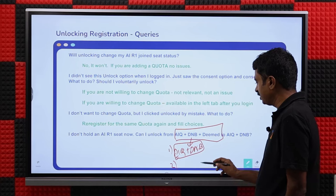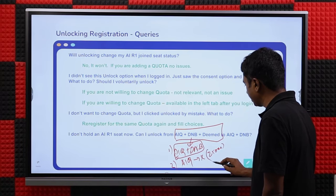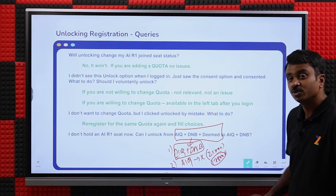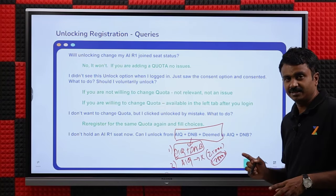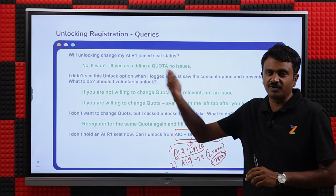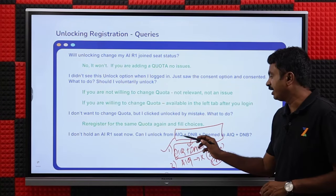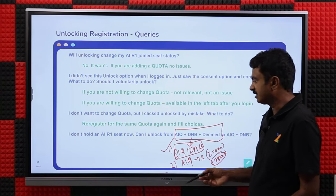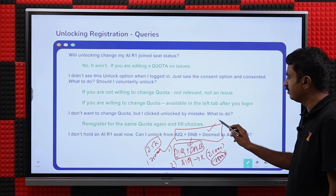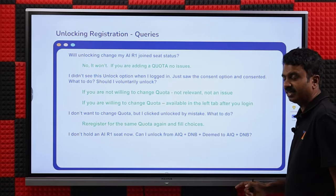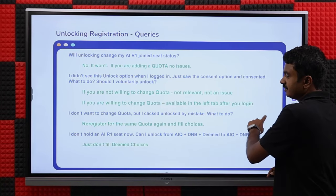When you fill AAQ plus DNB choices and are allotted an AAQ seat but don't join, the forfeiture is only 25,000 — the 1,75,000 will be refunded. Don't pay another two lakhs thinking that if you take an AAQ seat you might lose two lakhs — that confusion arises from exit-with-forfeiture for Round 2 to Round 3 upgradation. Even if allotted an AAQ plus DNB seat having paid two lakhs for deemed and you don't join (exit with forfeiture), only 25,000 is forfeited and 1,75,000 is refunded. Only if you opt for a deemed seat and then don't join will you lose two lakhs. Just don't fill deemed choices if you don't want deemed.